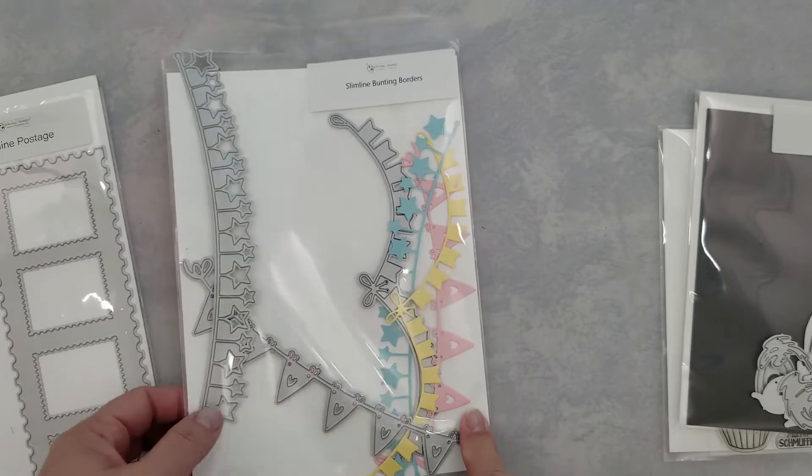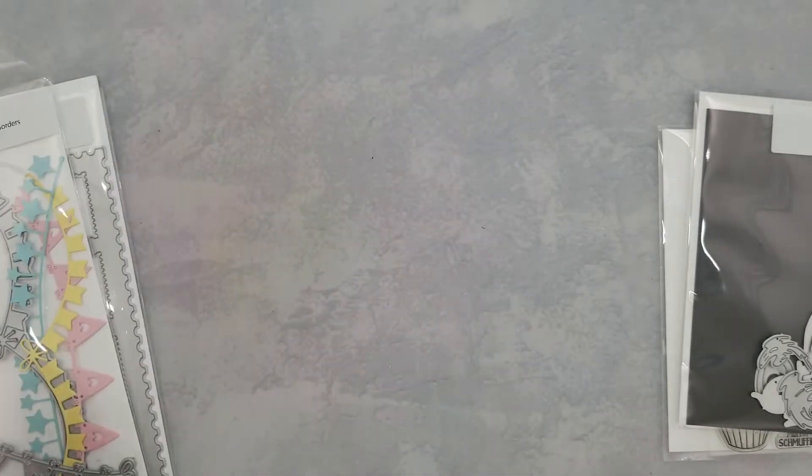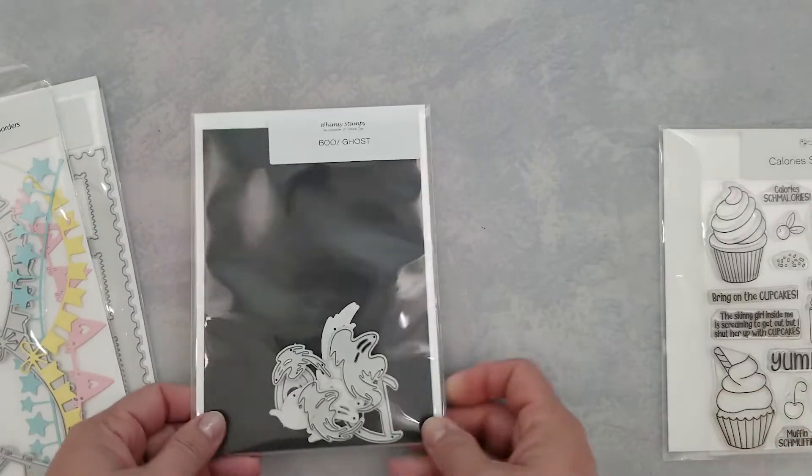But for now let me introduce you to the products I'll be using: the slimline postage die, the slimline bunting dies, boo ghost and die set, and the calories schmallories stamp set.